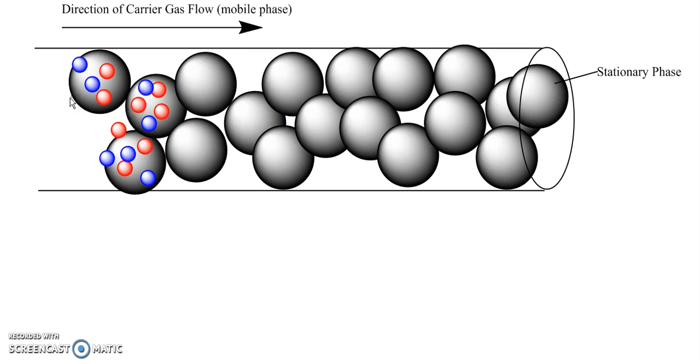In this particular example I've got a mixture of two compounds that I've injected into my gas chromatogram. One is represented by these blue spheres, the other is represented by these red spheres. You can see what happens is that the compounds that are entered into the column, are injected into the column, stick to the stationary phase.